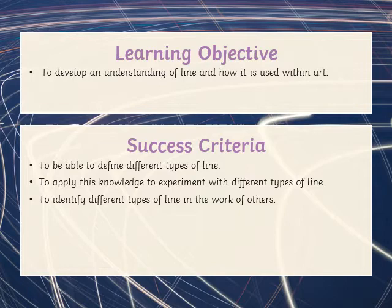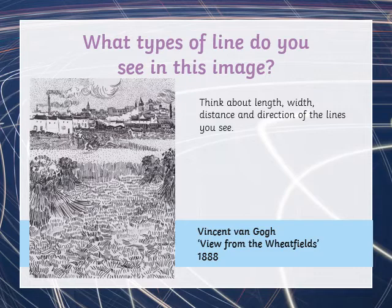So let's have a look at this picture here. What types of line do you see in this image? Look carefully. Think about the length, the width, the distance and the directions of the lines that you can see. We've got lines in the foreground, we've got lines in the mid-ground and we've got some lines in the background. Are all the lines the same? Spend a few moments looking carefully at this picture. You can pause the video now if you need to.